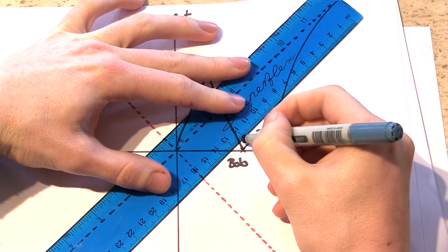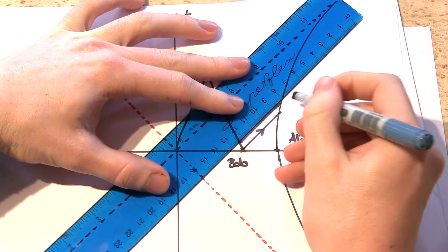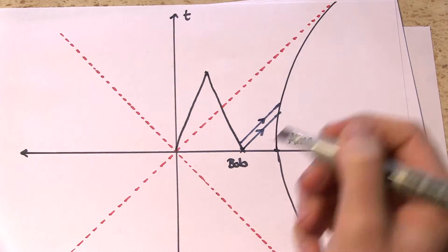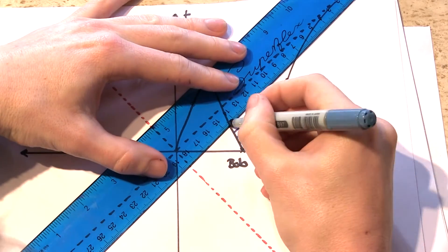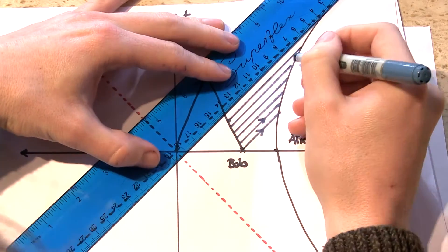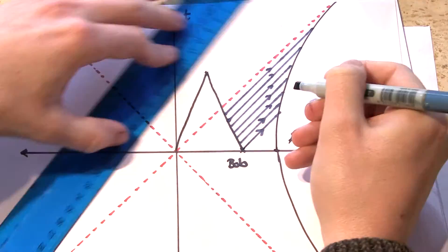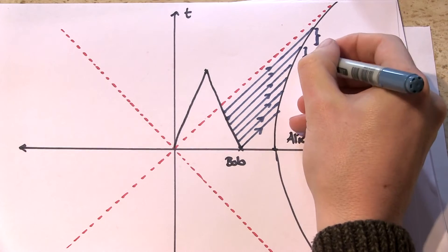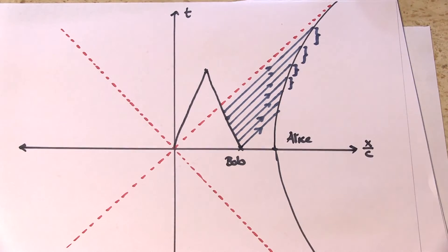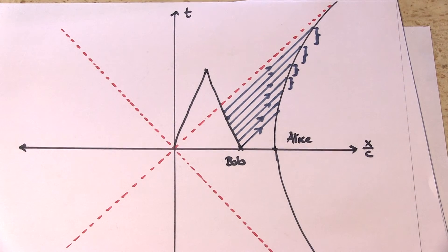Let's suppose Bob emits a light every second. Perhaps he's wearing a lighthouse on his head. Then on the next flash of the light, Alice will have seen Bob move towards me. Let's draw in all of the flashes. Can you see that because of the way that Alice is moving, the later flashes have to travel further to reach Alice. And so the time between each flash, from Alice's perspective, gets longer and longer. That's just a consequence of special relativity called time dilation.